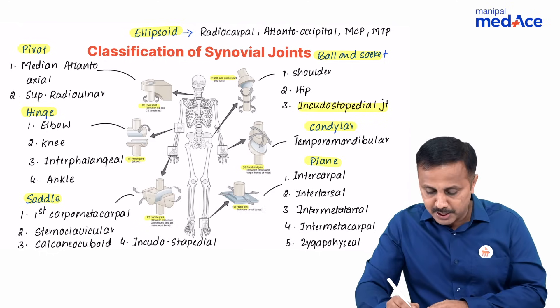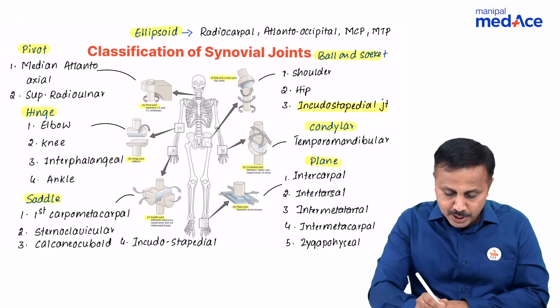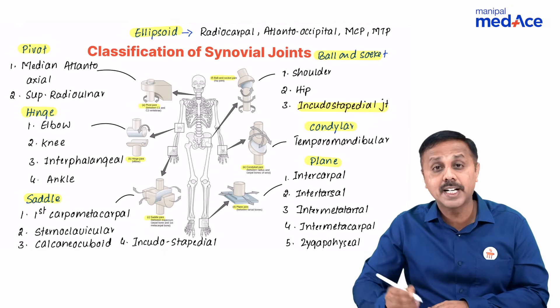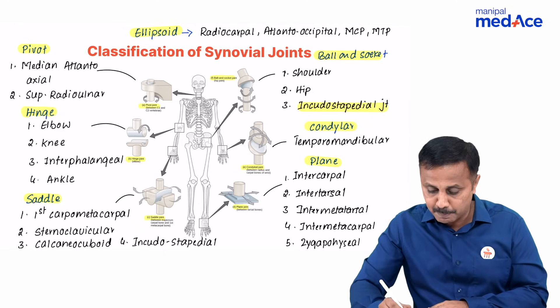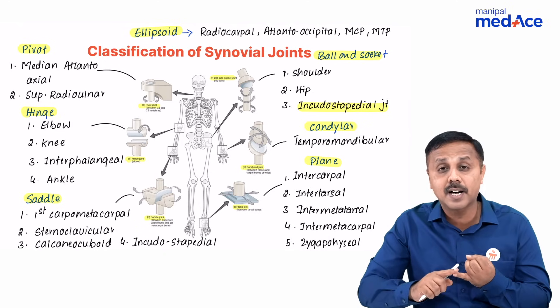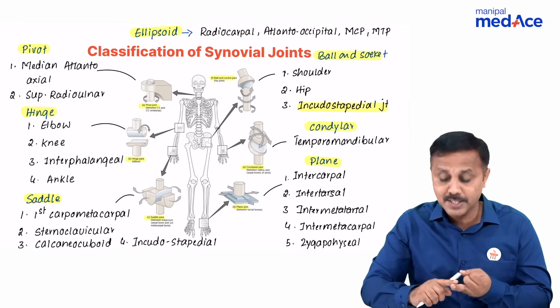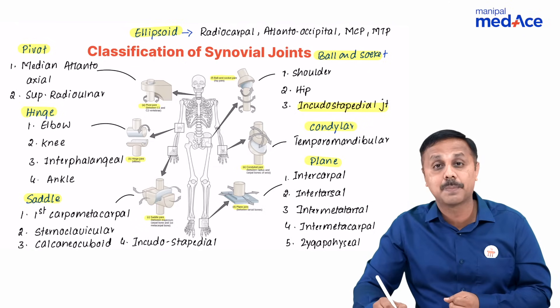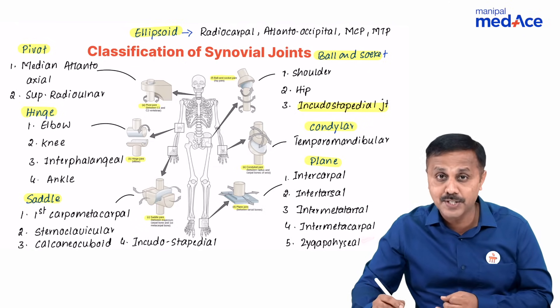Examples for condylar joints include the temporomandibular joint. Examples for plain synovial joints are intercarpal, intertarsal, then we have intermetatarsal, intermetacarpal, and zygapophysial.